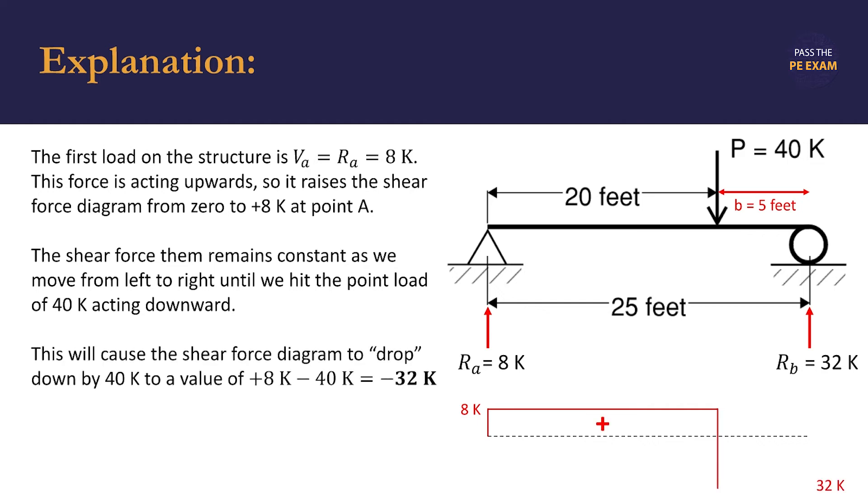When we hit point P, the shear force diagram drops by the magnitude of that point load (40 kips), resulting in a new value of negative 32 kips. We have our positive 8 kips from point A minus the 40 kips—we subtract because this is a downward force in the opposite direction—giving us negative 32 kips.